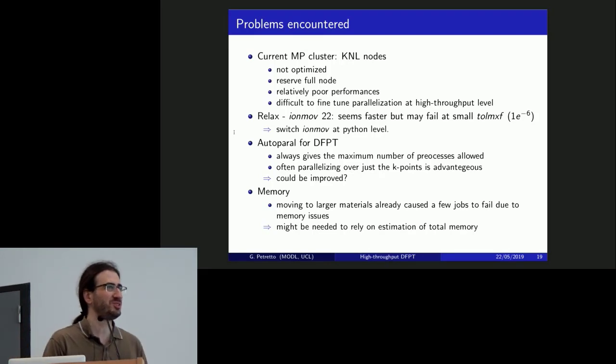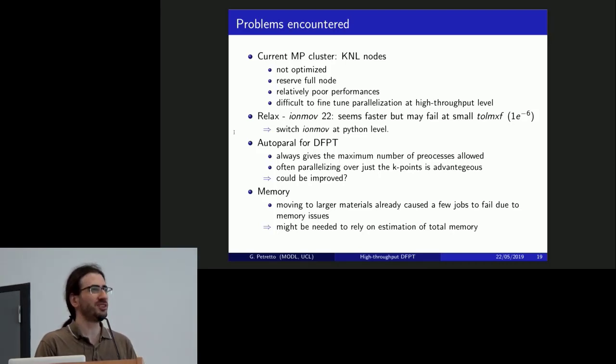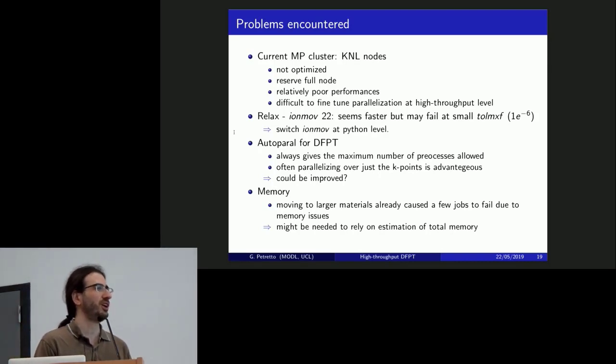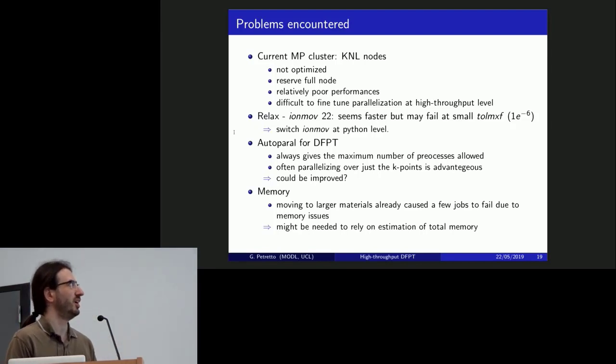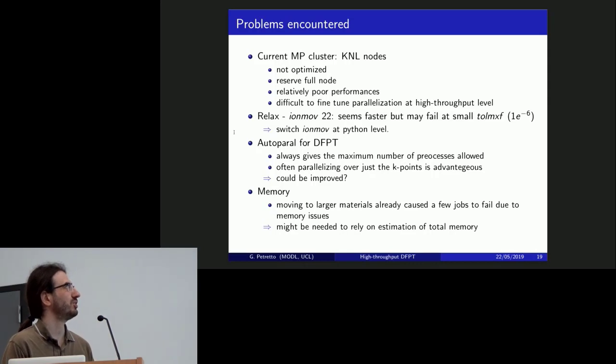Another thing, Fabienne this morning said that nobody's using iMove 22. Well, I do. But the problem is that it's fine. Seems faster, actually. But when we use very small values for the tolerances, sometimes it fails. When I approach the final values, it just stops or crashes. That was a small problem. And well, up to now, my best recipe is to switch to another iMove value. But yet, this was something that was to take into account.